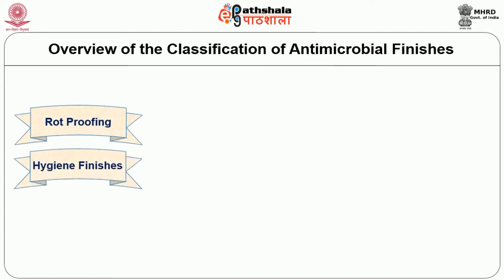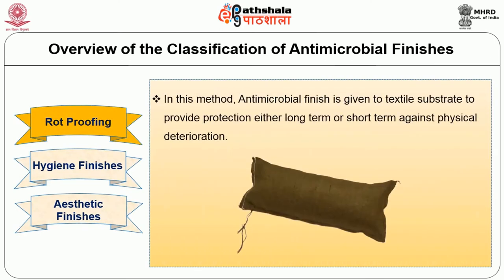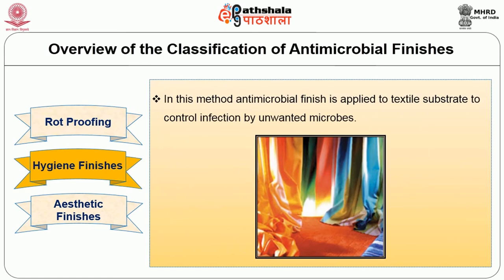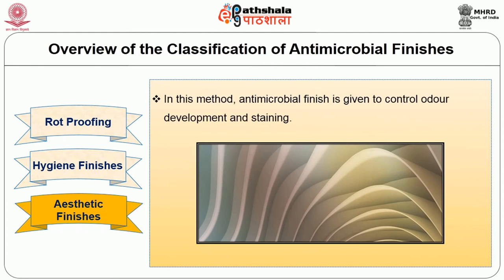Antimicrobial finish is subdivided into three main groups. Rot-proofing: antimicrobial finish is given to textile substrate to provide protection, either long-term or short-term, against physical deterioration. Hygiene finishes: antimicrobial finish is applied to textile substrate to control infection by unwanted microbes. Aesthetic finishes: antimicrobial finish is given to control odor development and staining.